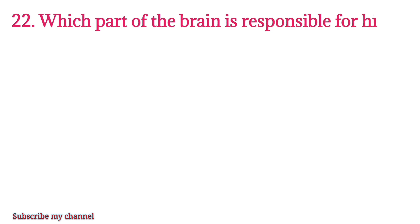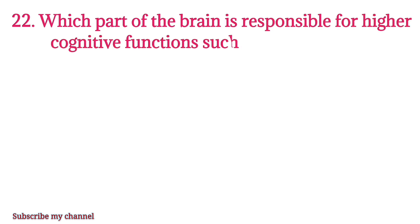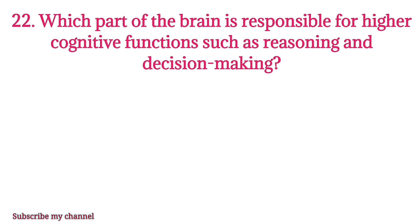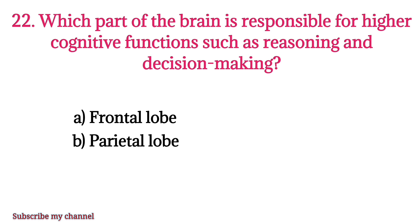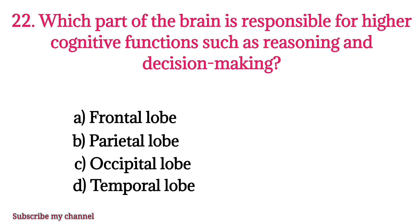MCQ number twenty-two: Which part of the brain is responsible for higher cognitive functions such as reasoning and decision making? Option A: frontal lobe, option B: parietal lobe, option C: occipital lobe, option D: temporal lobe. The right option is option A.